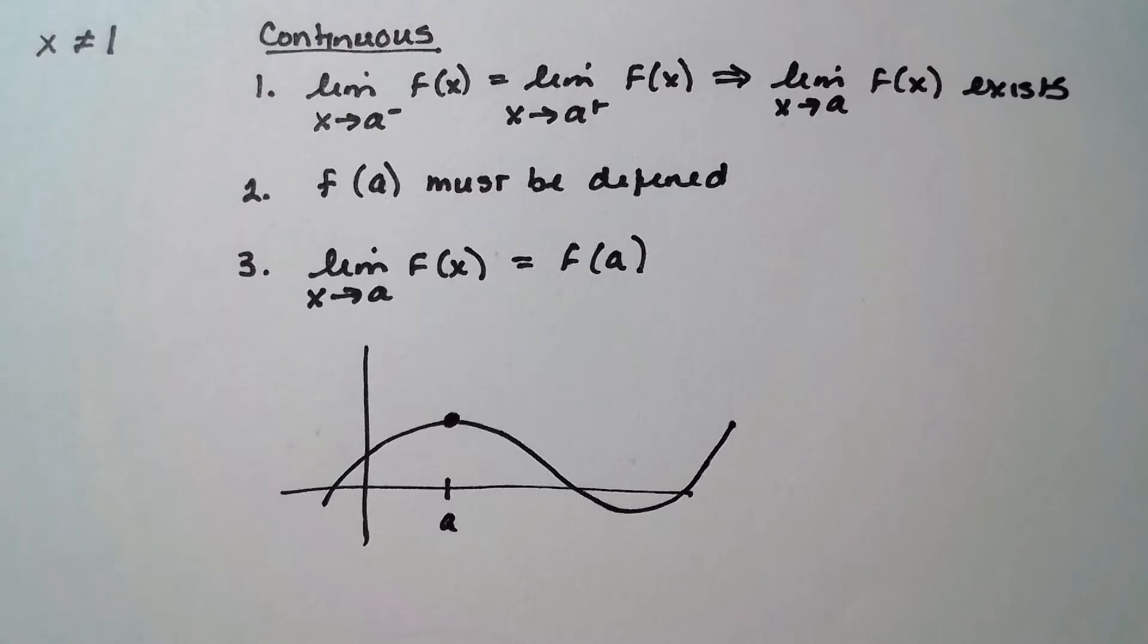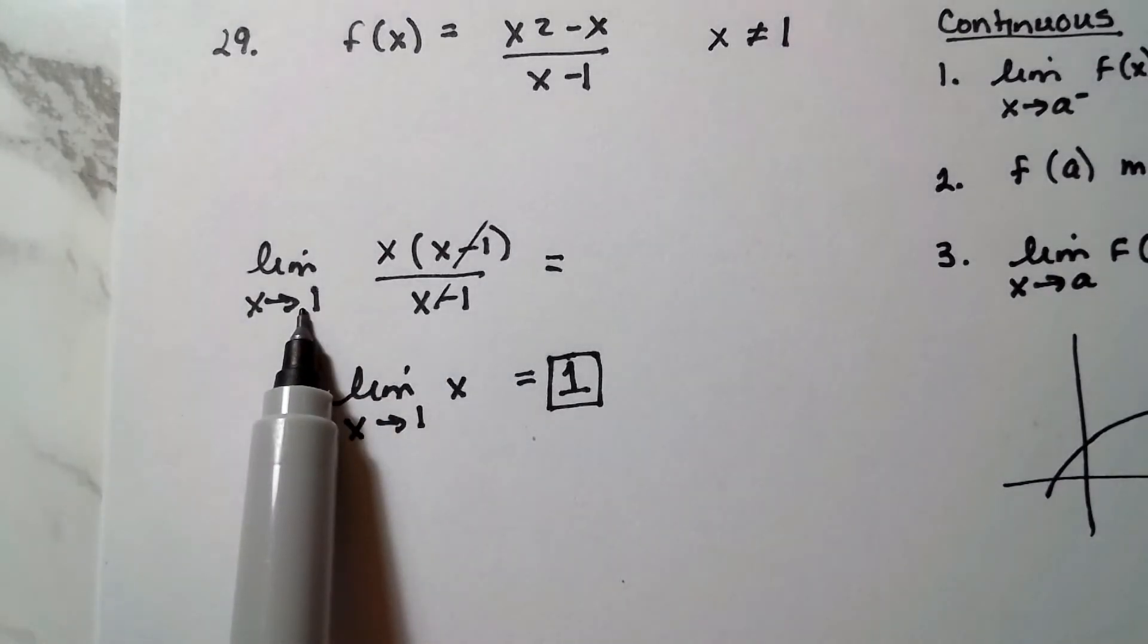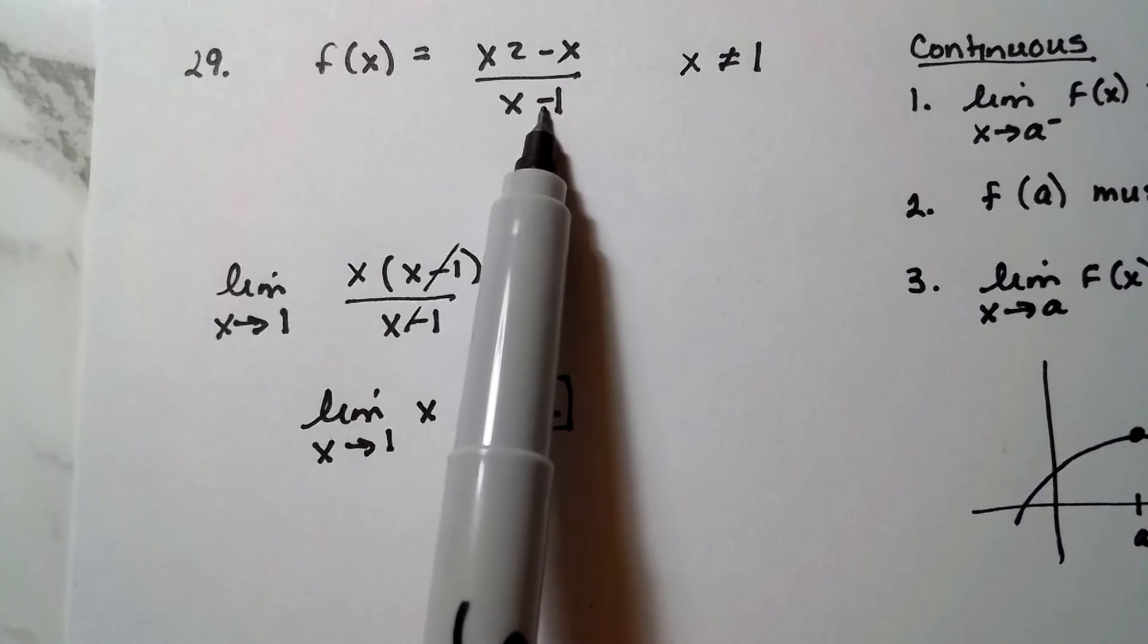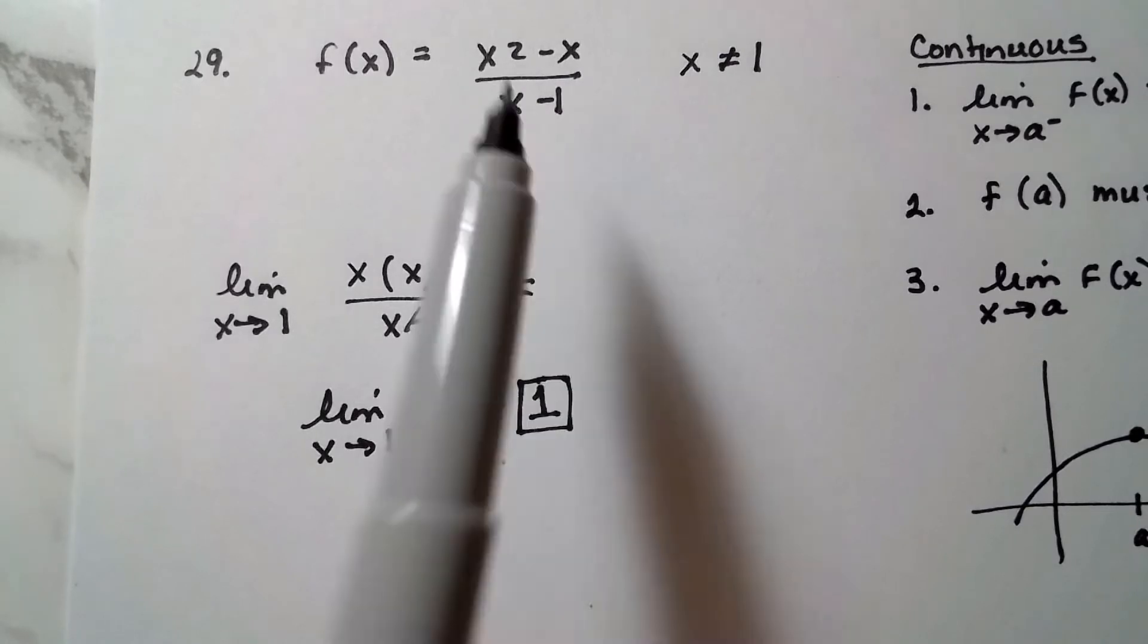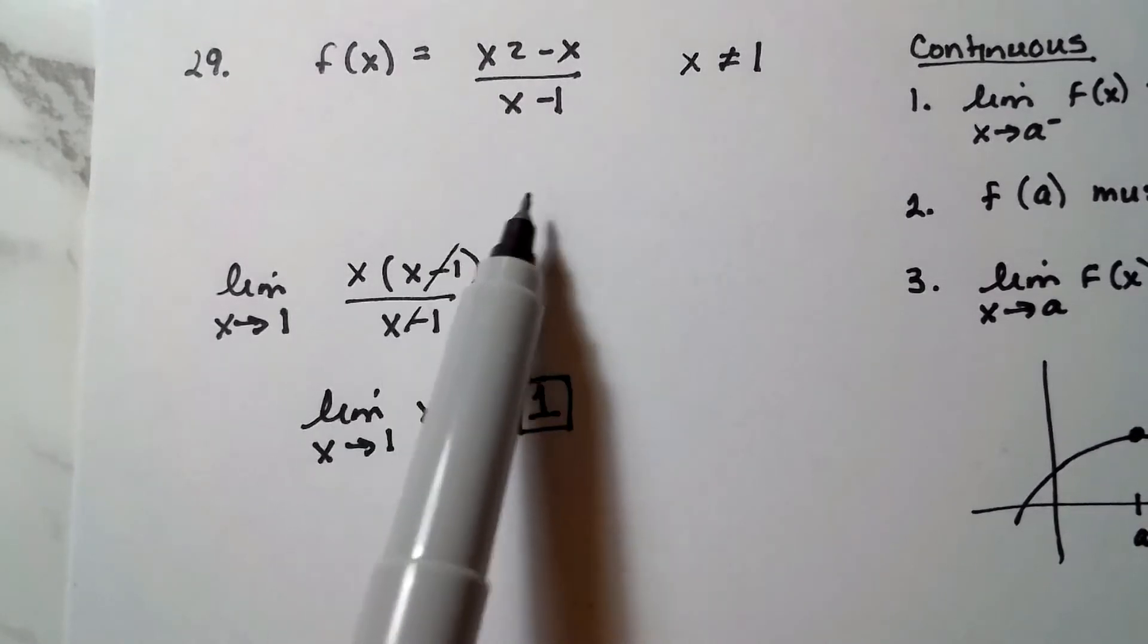So what you need to do is just take a limit. So you take the limit as x approaches one. And the key is, whenever you have a rational expression, meaning a polynomial in the numerator and a polynomial in the denominator, then what you want to do is try and factor it so you can get rid of something.